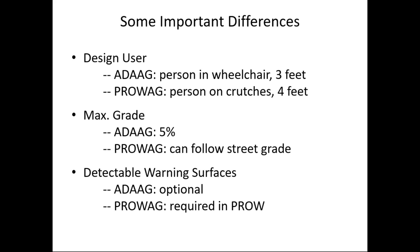There are important differences between ADAG and ProAg. ADAG's design user is a person in a wheelchair, so the minimum width is three feet. ProAg's design user is a person on crutches or using braces — a footprint of about three and a half to four feet — so ProAg requires a minimum width of four feet. Additionally, the maximum sidewalk grade in ADAG is 5%, while in ProAg it follows street grade.